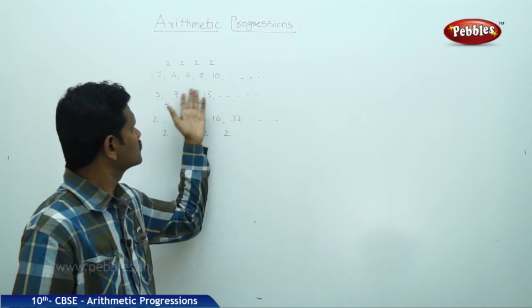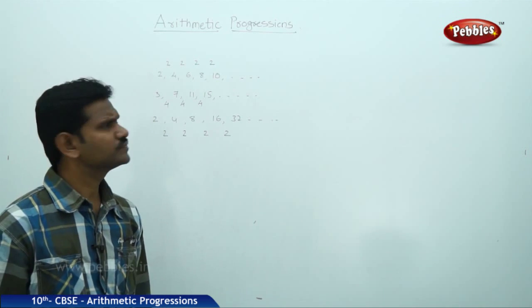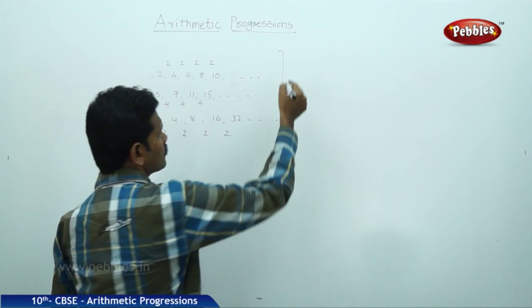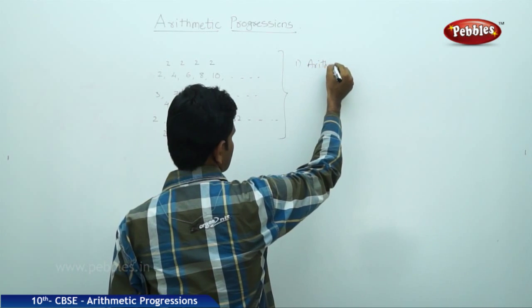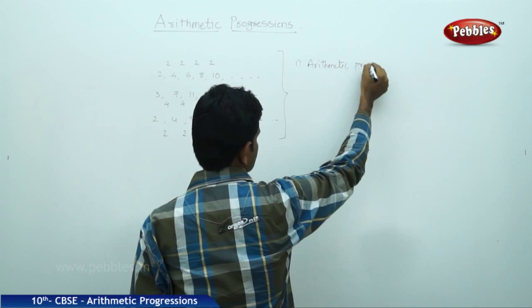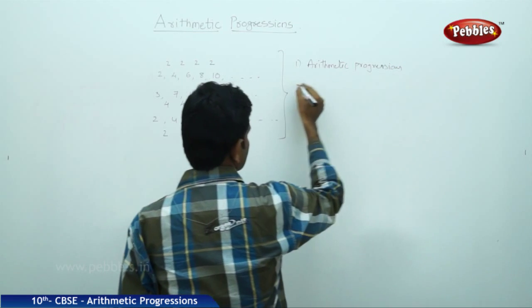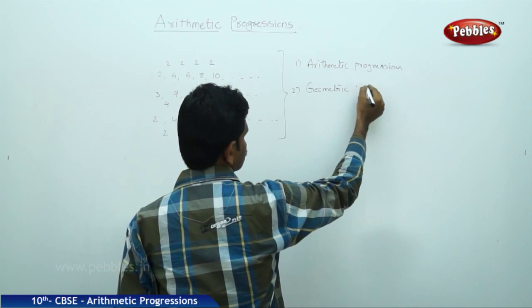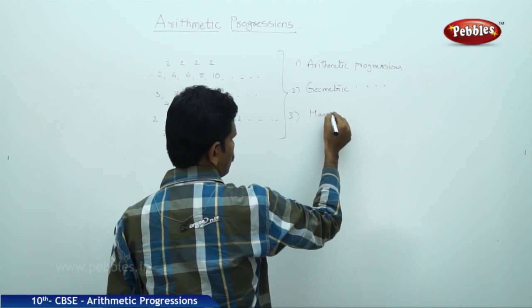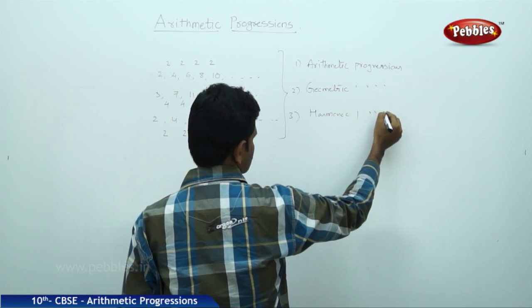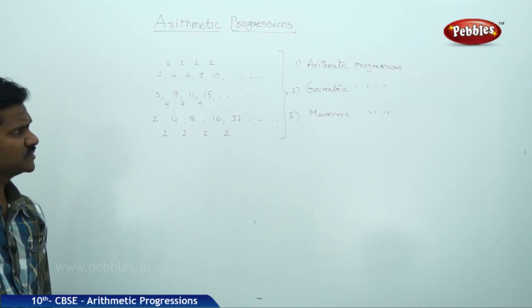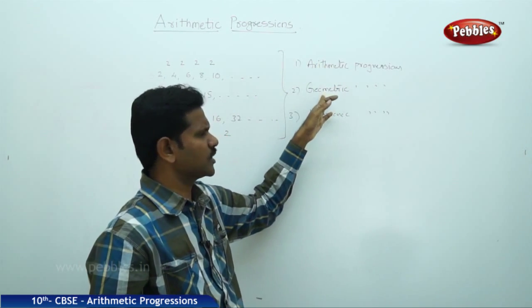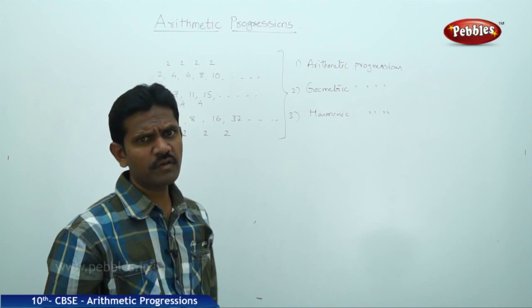Such sequences are called progressions. There are three types of progressions: number one, arithmetic progressions; number two, geometric progressions; and number three, harmonic progressions. In this session, we are discussing only arithmetic progressions. Geometric progressions and harmonic progressions we will study in our further classes.